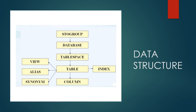In data structure, we have a storage group, which is a defined area on a disk used to store tables and indexes. Next is the database — the relational database we already know. Within the database, we have tablespace. All tables within DB2 are stored in a tablespace. A tablespace is a storage structure that consists of a VSAM dataset. There are different types of tablespace: partition by growth, partition by range, and segmented tablespace.